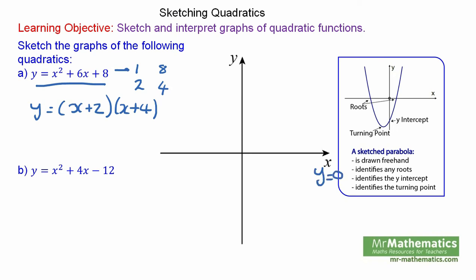Now to find the roots of the equation along the x axis is when y equals 0. So 0 equals x plus 2 times x plus 4. This has solutions at x equals negative 2 and x equals negative 4. So these are the roots of the equation along the x axis.